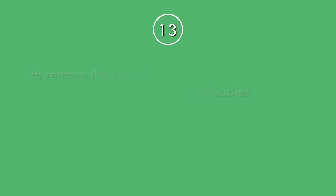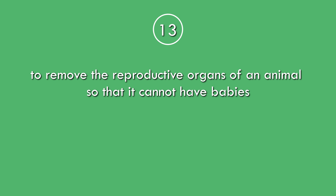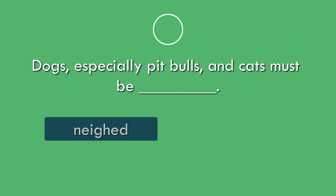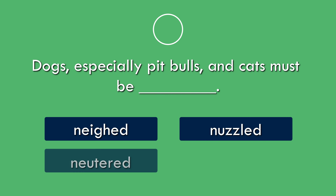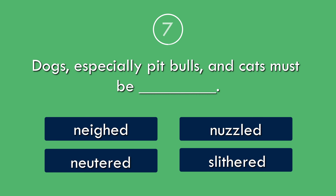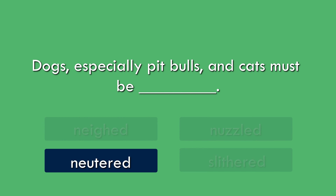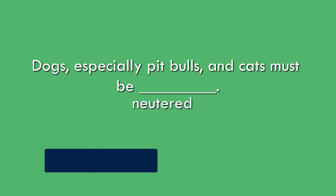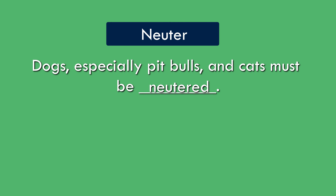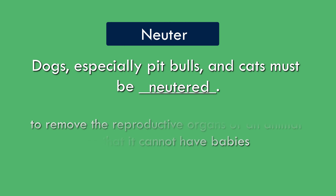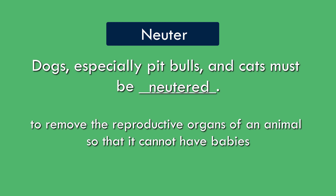Question 13. To remove the reproductive organs of an animal so that it cannot have babies. Dogs, especially pit bulls, and cats must be neutered. Neuter: to remove the reproductive organs of an animal so that it cannot have babies.